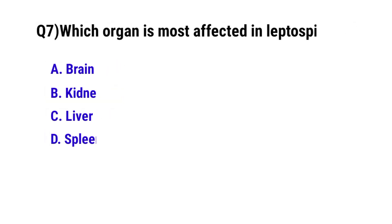Question No. 7. Which organ is affected in leptospirosis? The correct option is C: Liver.